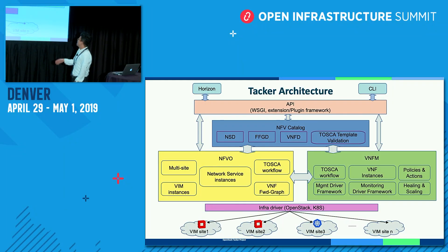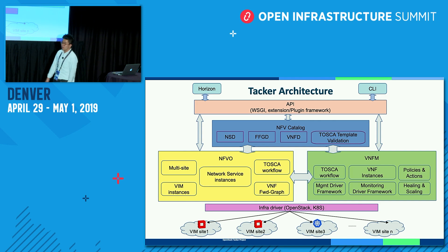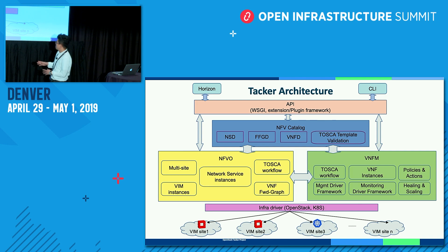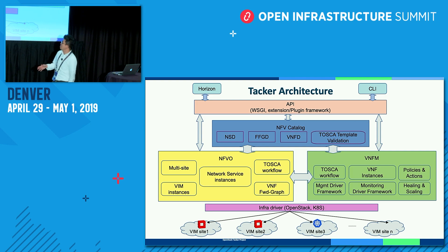This is the TechLight architecture. It consists of an NFVO part, a VNFM part, and an NFV catalog. Basically, TechLight supports two kinds of VIM: the first one is OpenStack, and the other one is Kubernetes. This VIM is managed by the infra driver in TechLight. The NFVO includes the function of multi-site, VIM and network services, and the VNF forwarding graph.